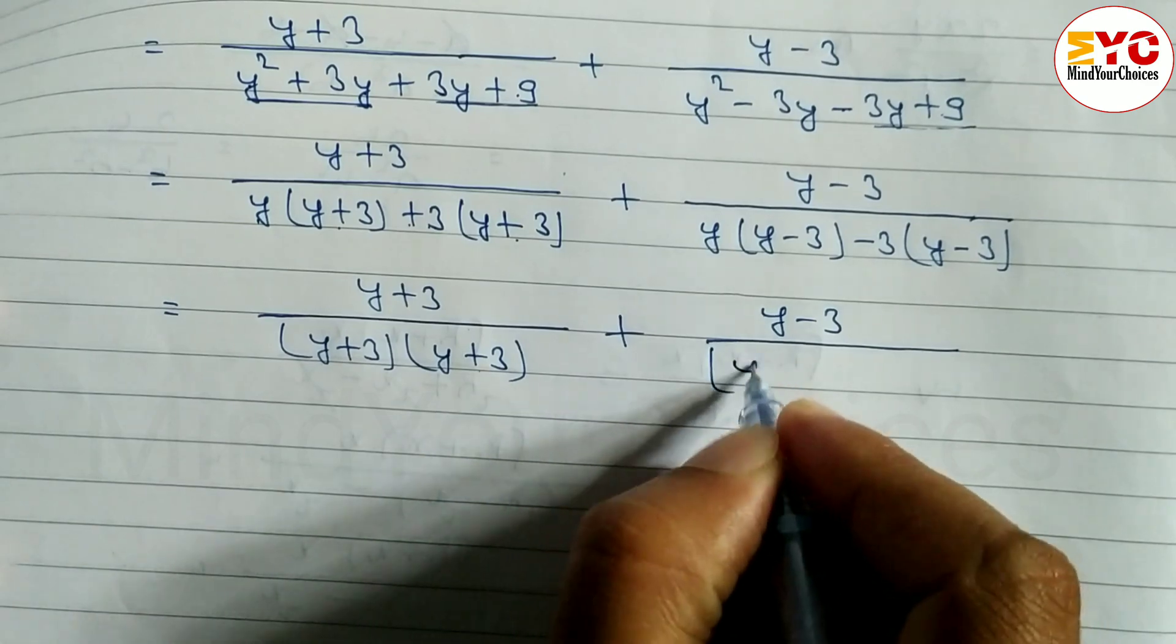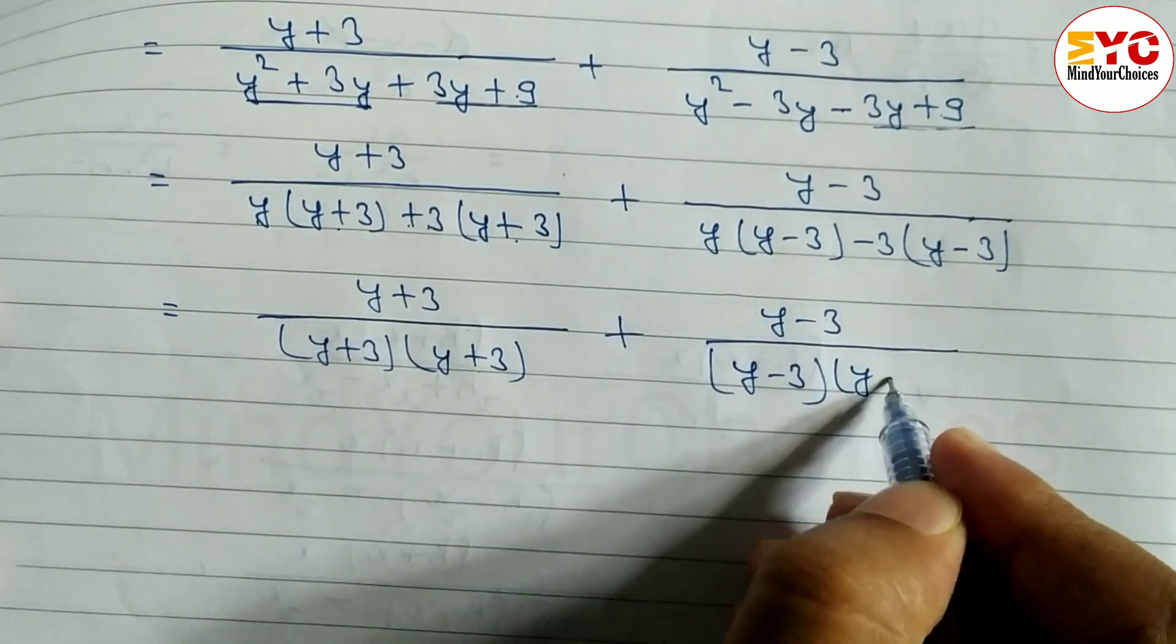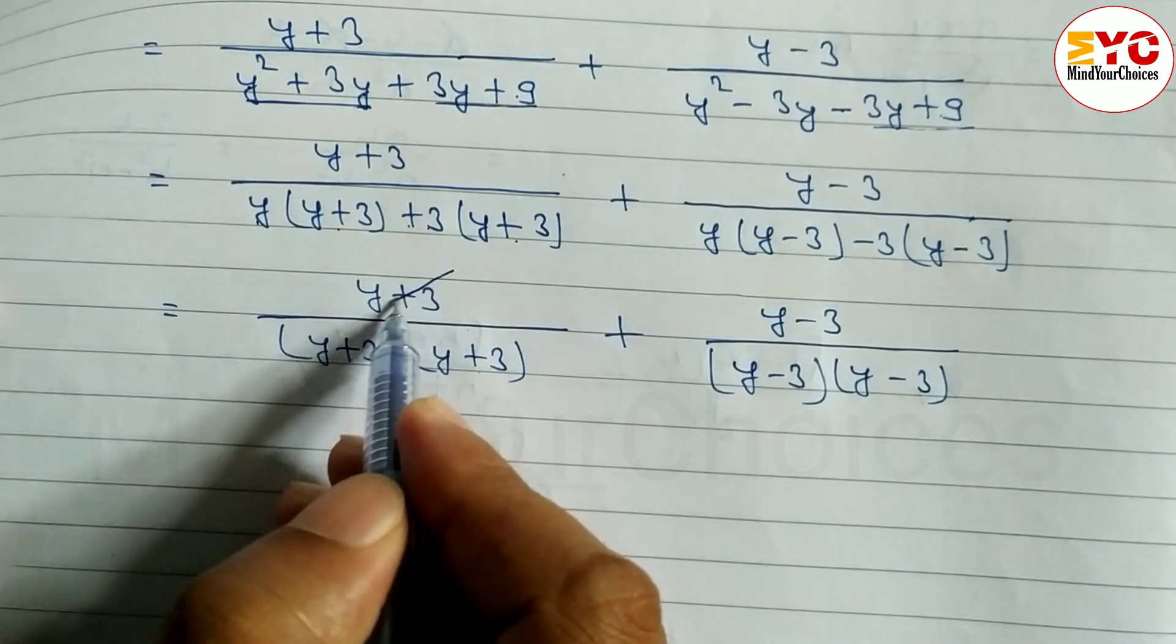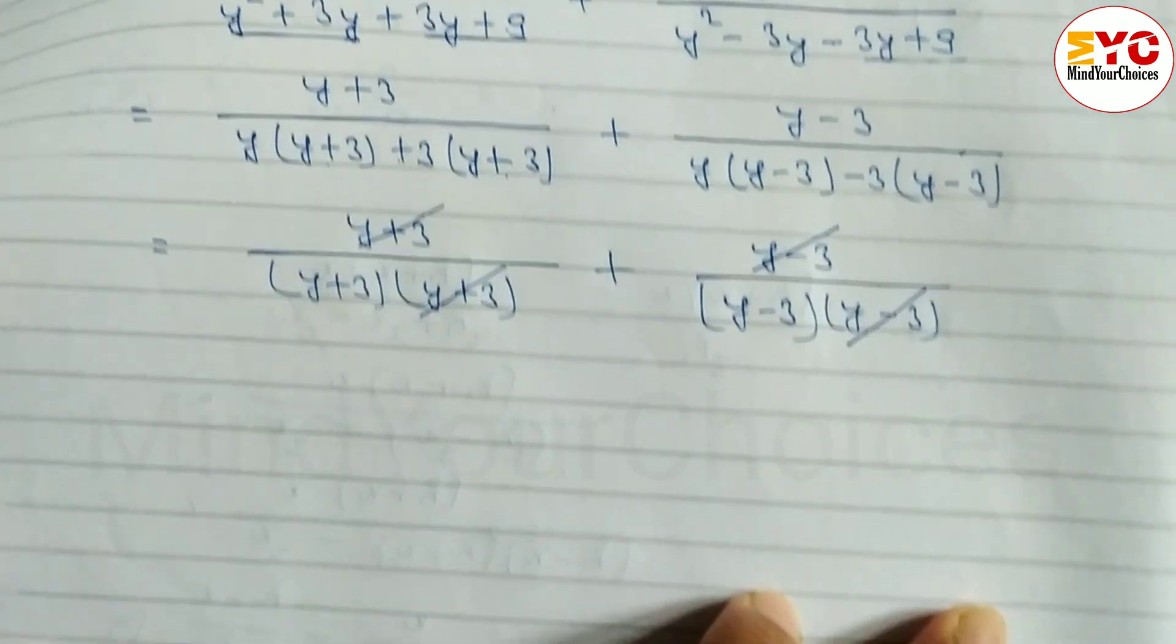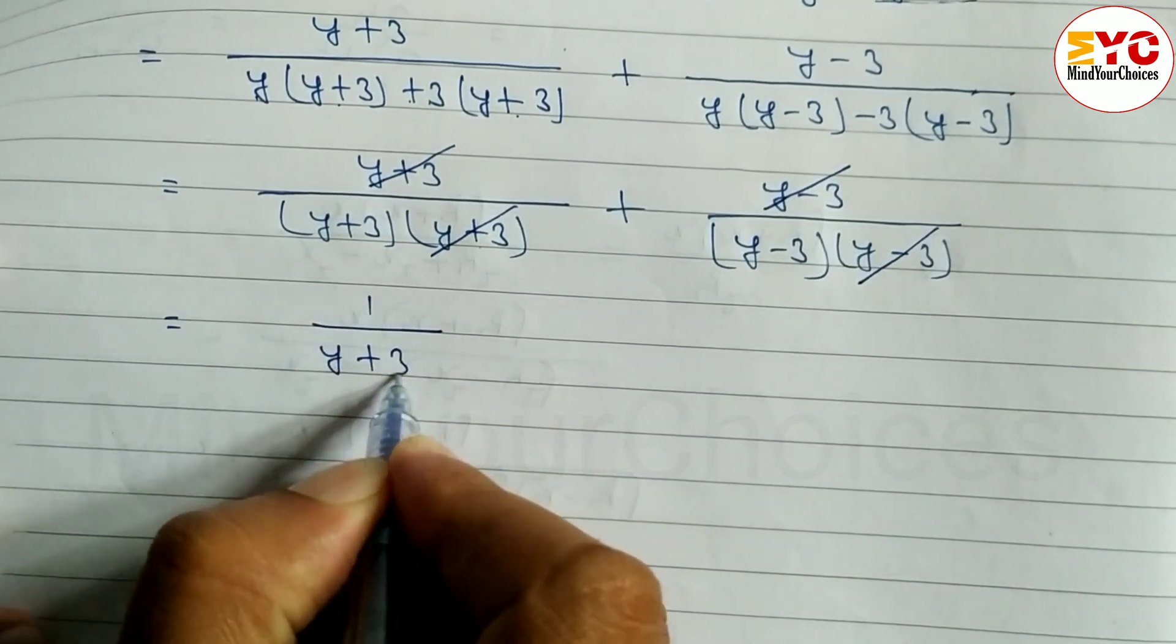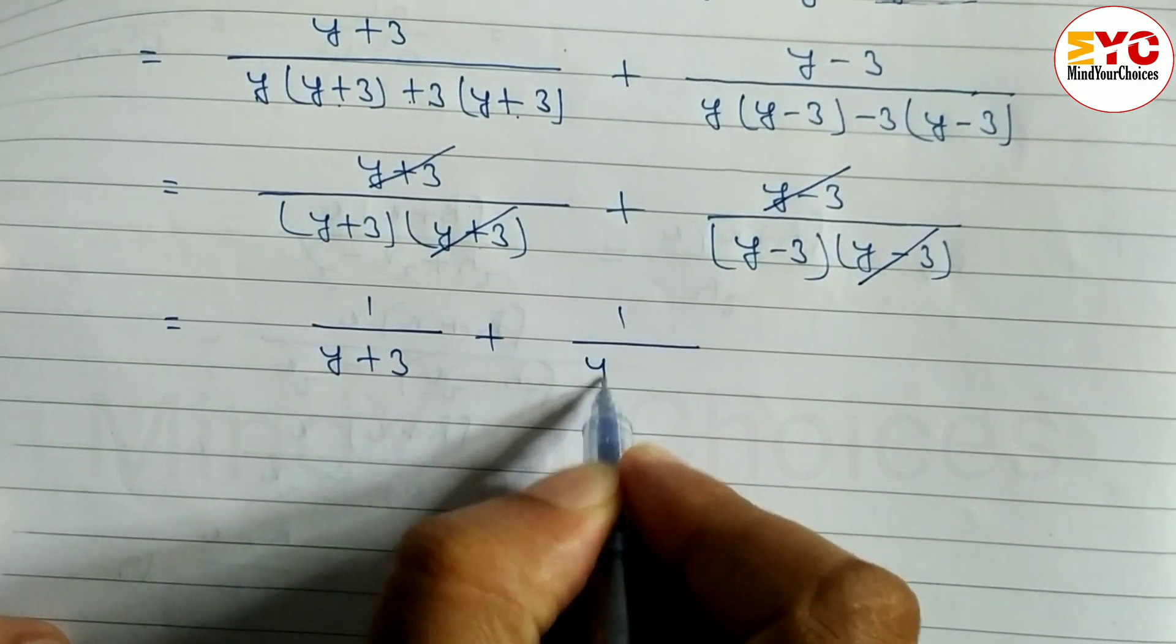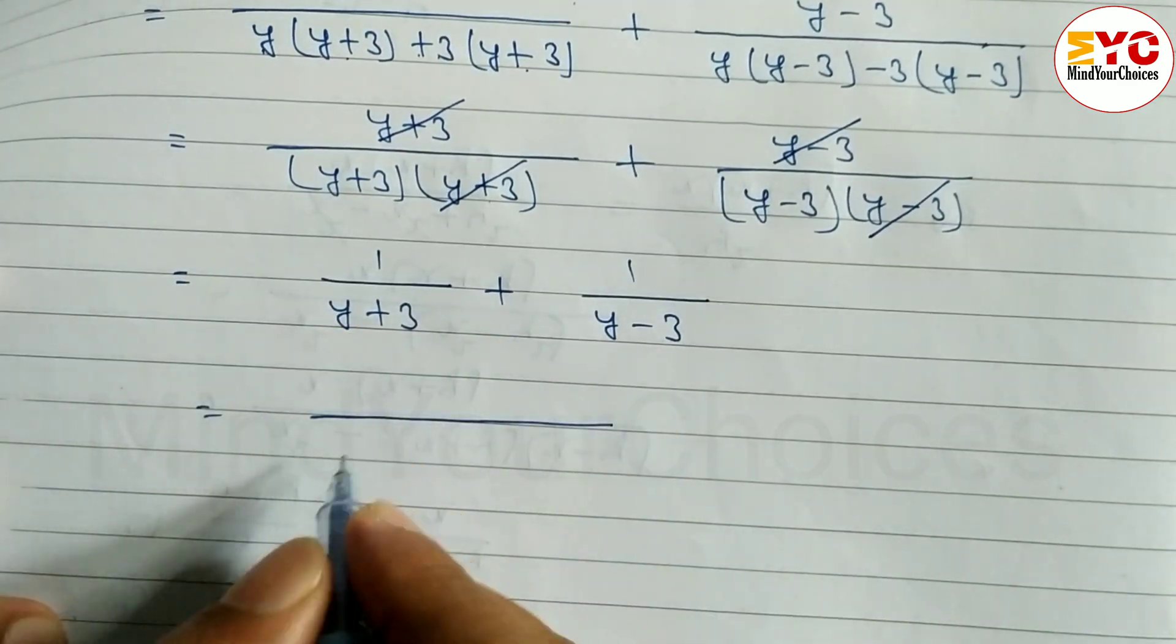Now y plus 3 cancels with y plus 3, and y minus 3 cancels with y minus 3. What remains is 1 over (y plus 3) plus 1 over (y minus 3). Now we take the LCM, which is (y plus 3)(y minus 3).